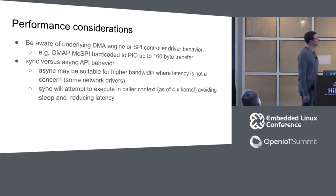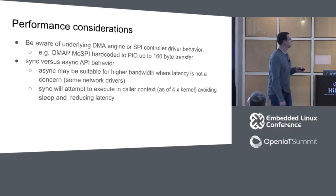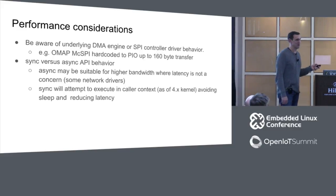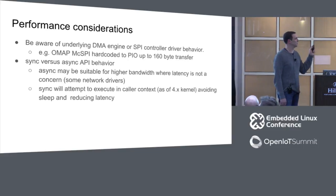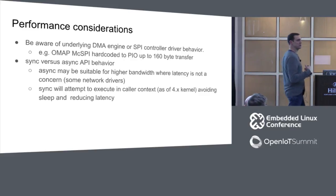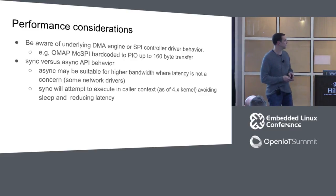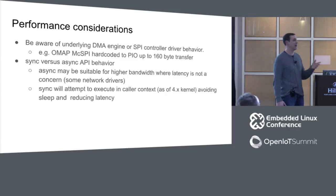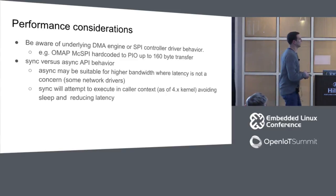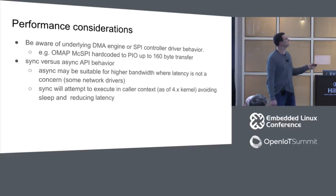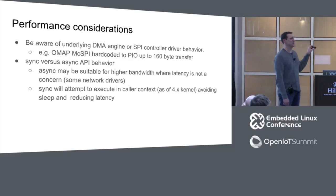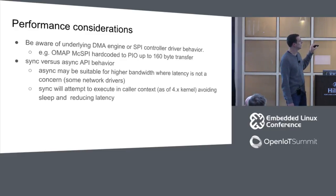You need to be aware of what the controller driver does when thinking about performance. An example: the OMAP McSPI driver has no heuristics about when it engages DMA — it simply says if the transfer size is greater than 160 bytes, it uses DMA; otherwise it's too much overhead. I saw people confused because DMA wasn't happening — they were doing 128-byte transfers on this driver. You need to be aware of those thresholds.